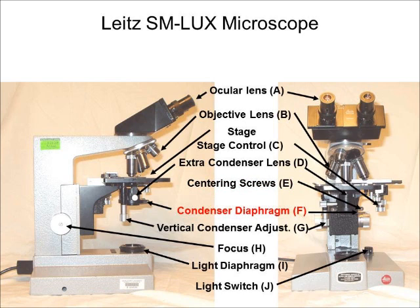Near the bottom of the condenser you will find an armature — that is the condenser diaphragm. This regulates the amount of light passing through the condenser and controls the depth of field, that is, what is in focus at any one particular time. This is very important for obtaining optimal resolution. On the very bottom of the condenser is the vertical condenser adjustment, which moves the entire condenser assembly up and down so that it is in focus. Again, this is important for obtaining optimal resolution.